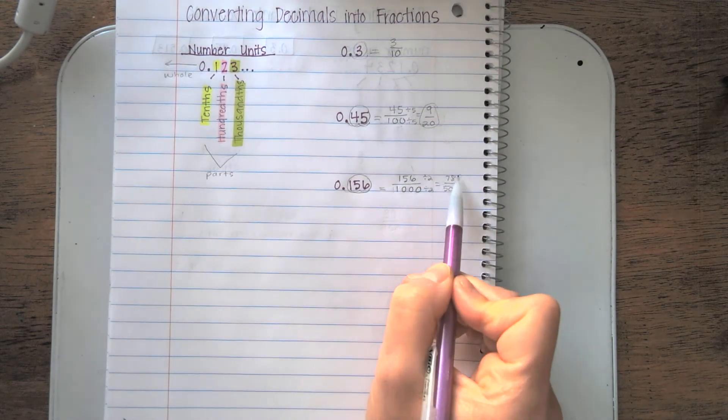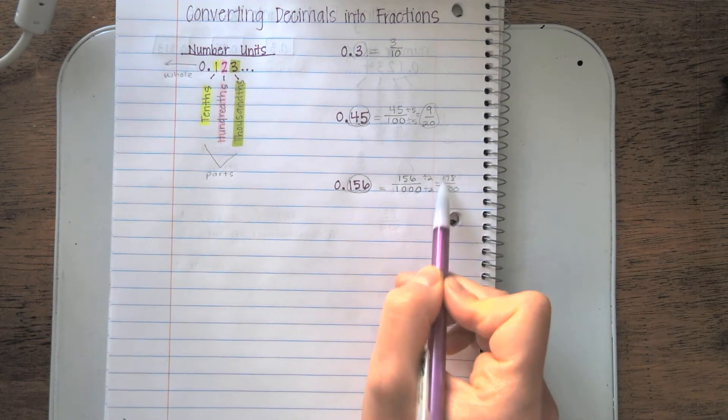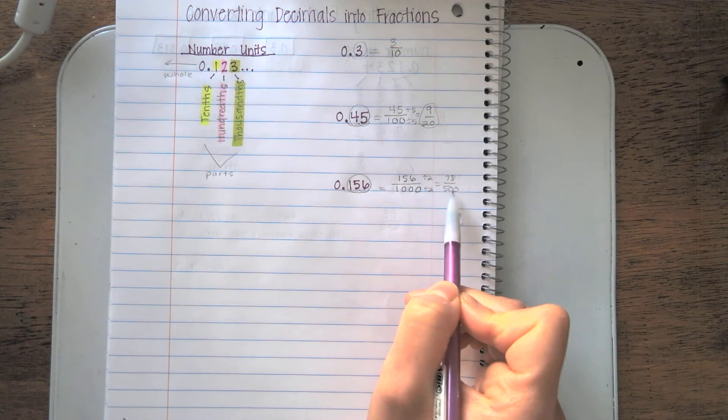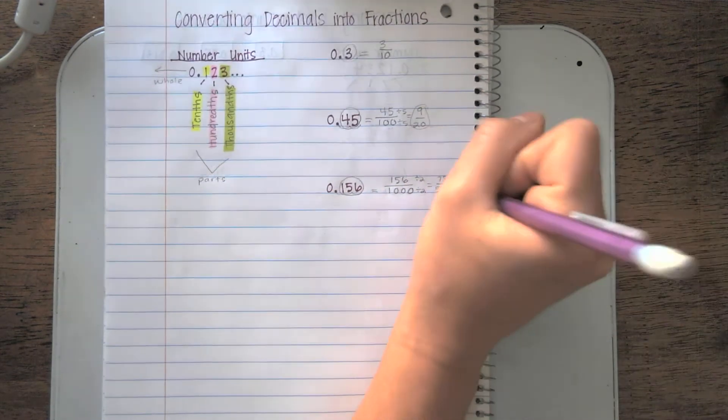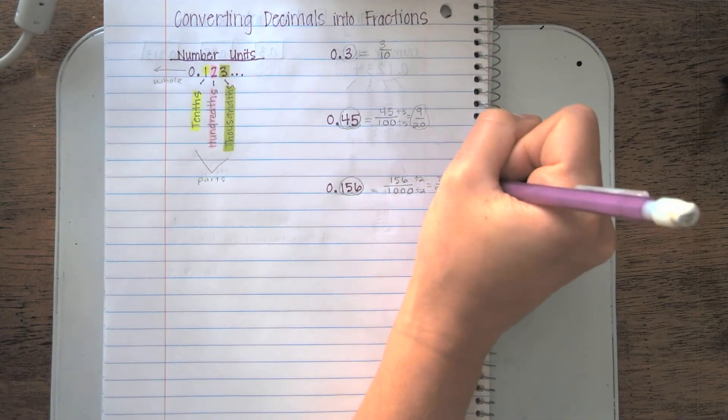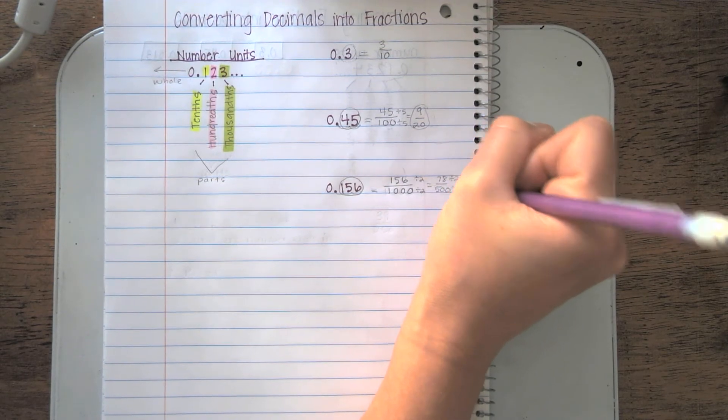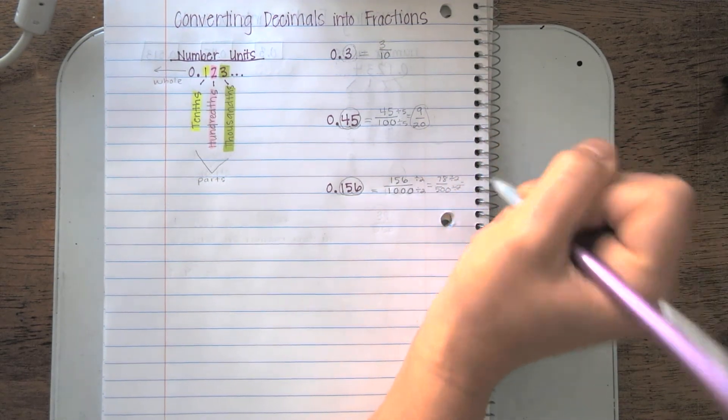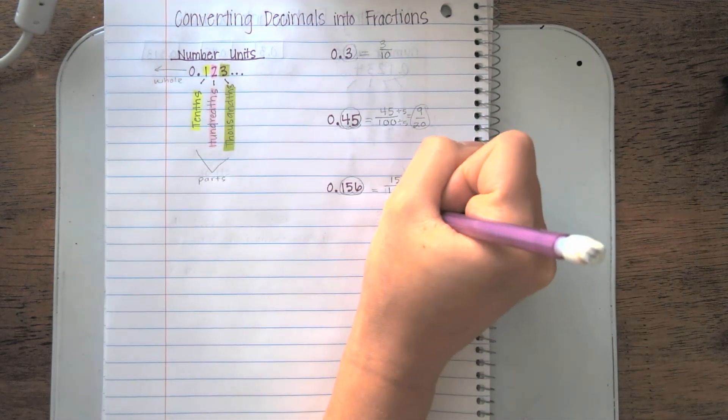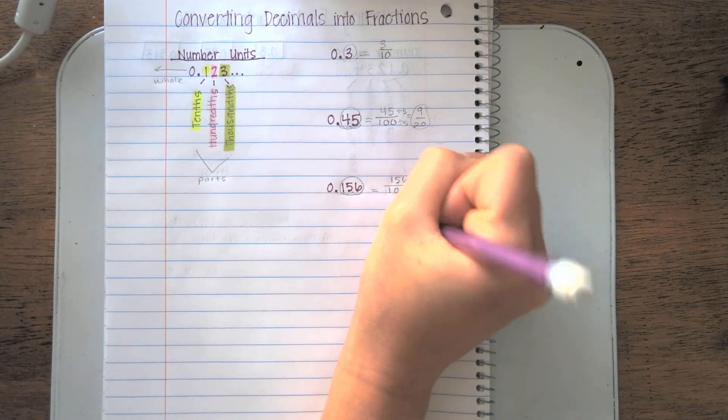Again, I'm looking at both my numerator and denominator. Even though they're not the same, they are both even. So again, I can divide by 2. 78 divided by 2, 500 divided by 2, that gives me 39/250.